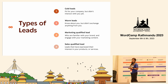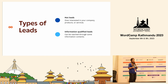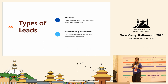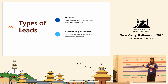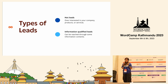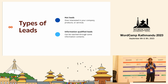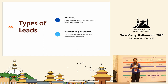Apart from these four types, there are two more types of leads: hot leads and information-qualified leads. Hot leads are people who are very highly interested in your company. Information-qualified leads can be reached through your business by some informative content, but for some reason, they are not reaching you yet. We need to know these types because without knowing your audience, you can't make a proper plan, segment your audience, or know how to sell your product.